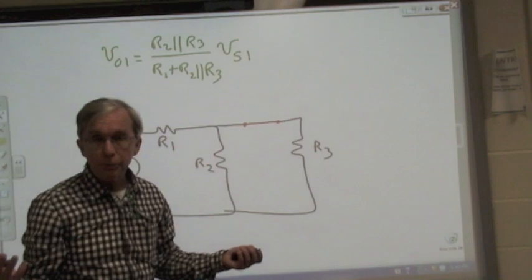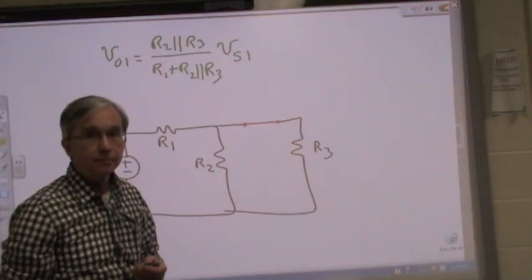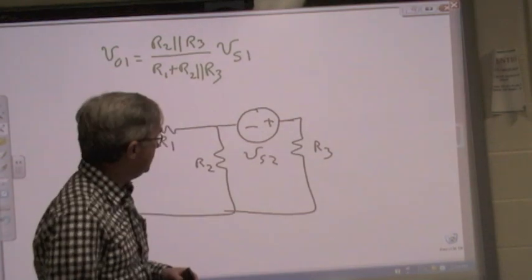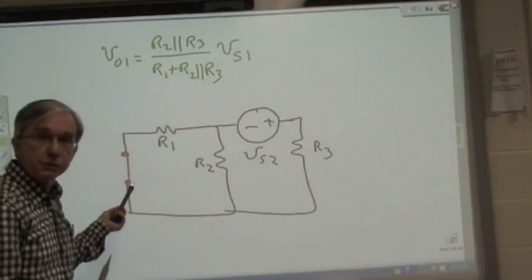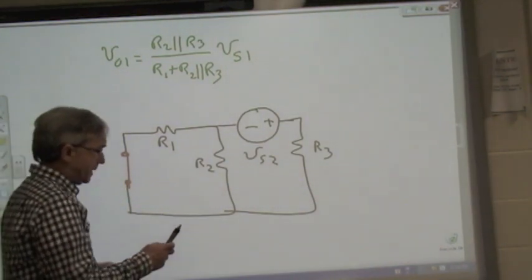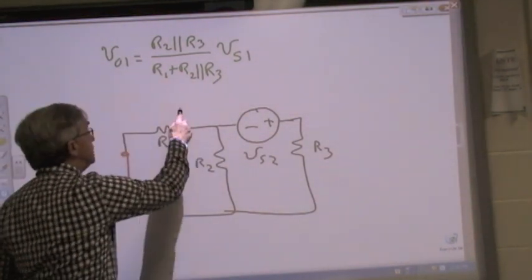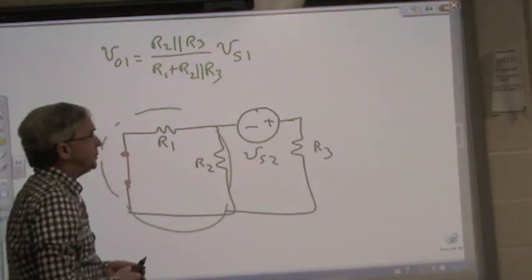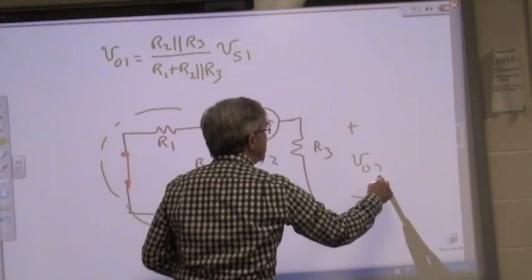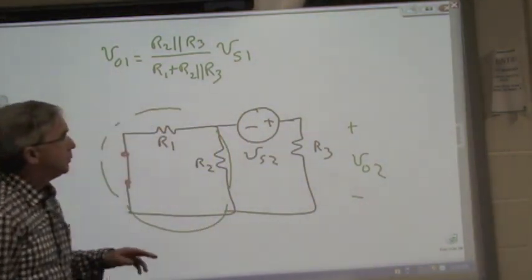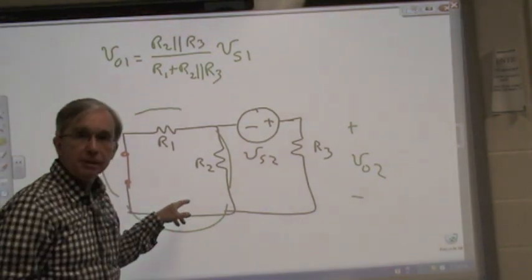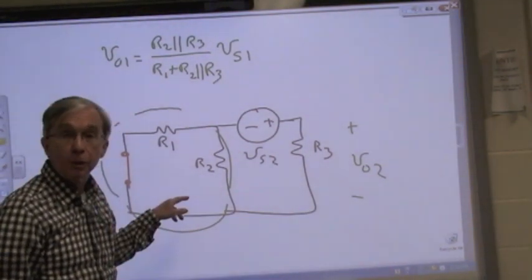And for the contribution due to Vs2, we've replaced Vs1 by a short circuit, we turn the source off, we set it to zero. We see that R1 and R2 are in parallel, and so by voltage division, Vout here, this is due to the second source, is equal to Vs2 times R3, divided by R3 plus the parallel combination of R1 and R2.